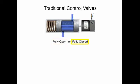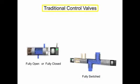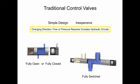The flow control of a traditional control valve is typically limited to fully open, fully closed, or fully switched to a new flow path. Traditional control valves are of simple design and capability. Changing direction, flow, or pressure during machine operation would require a complex hydraulic circuit.